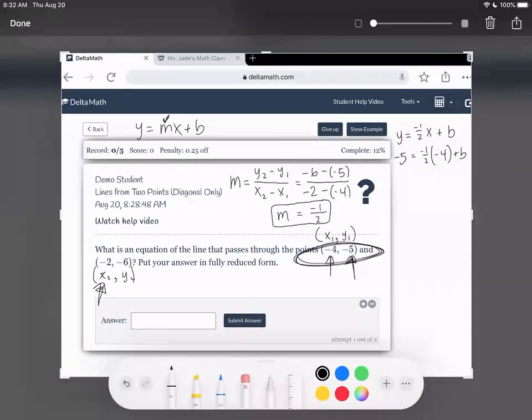So from here, it's very similar to a problem type that we did earlier. We just have to solve for b. And then we pretty much have it. So we have negative 5 is equal to, you guys can help me with this one. What's negative 1 half times negative 4? Two, yeah, two. Two plus b. And then how do we get rid of the two now? Subtract. Yep. Thank you. Subtract on both sides. So we got negative 7 is equal to b.